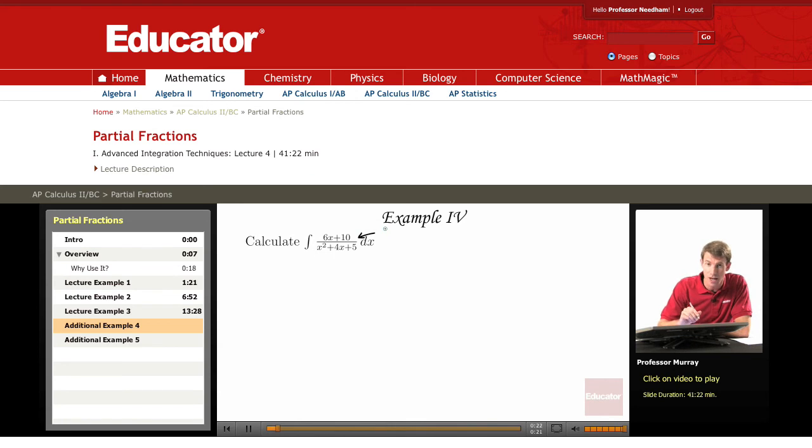And remember that the very first step of partial fractions is to try and factor the denominator. So we try to factor x squared plus 4x plus 5, and right away you get a problem. It doesn't work.